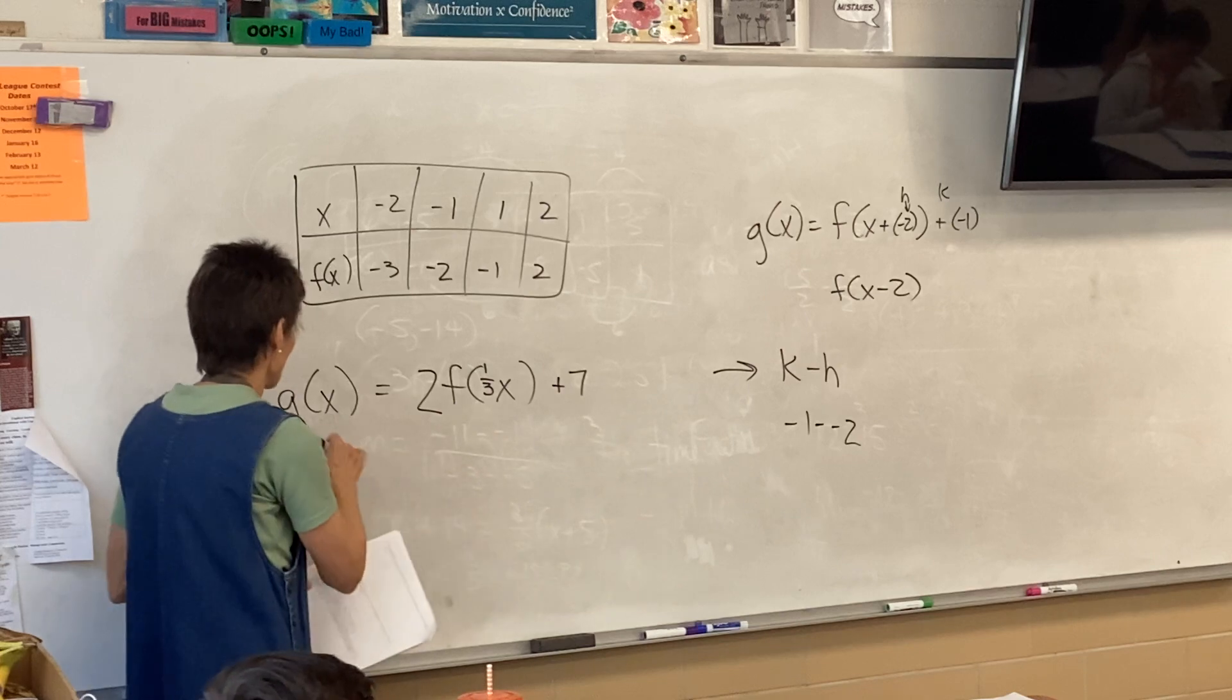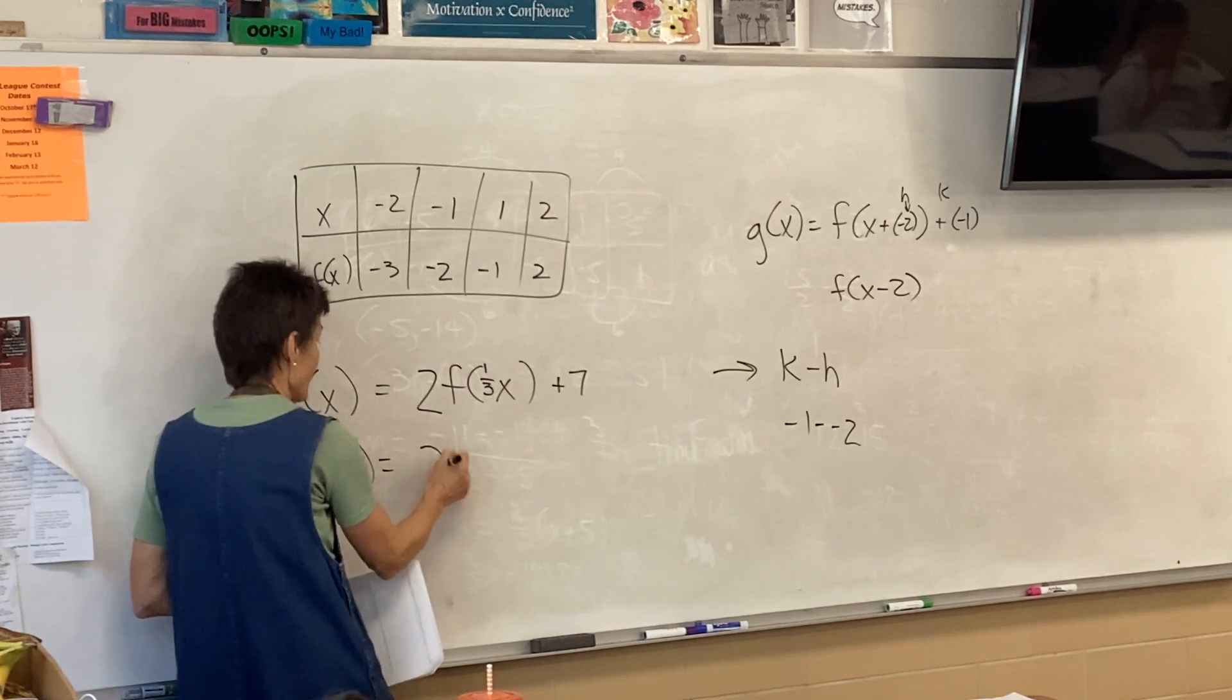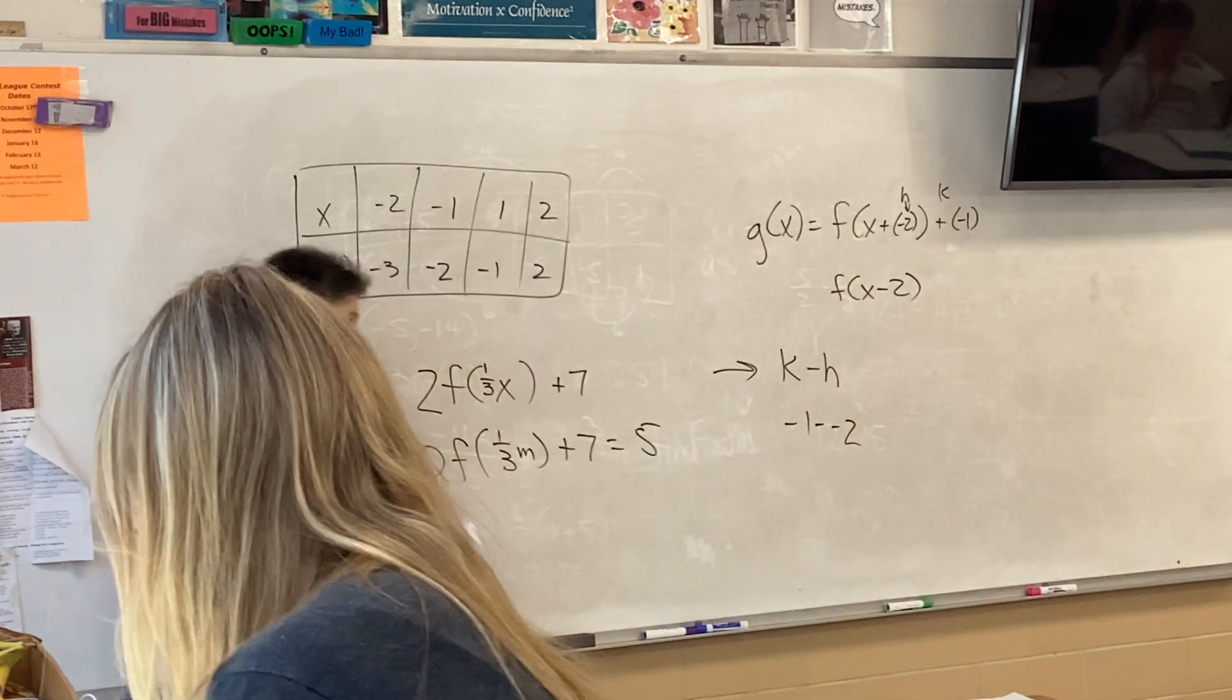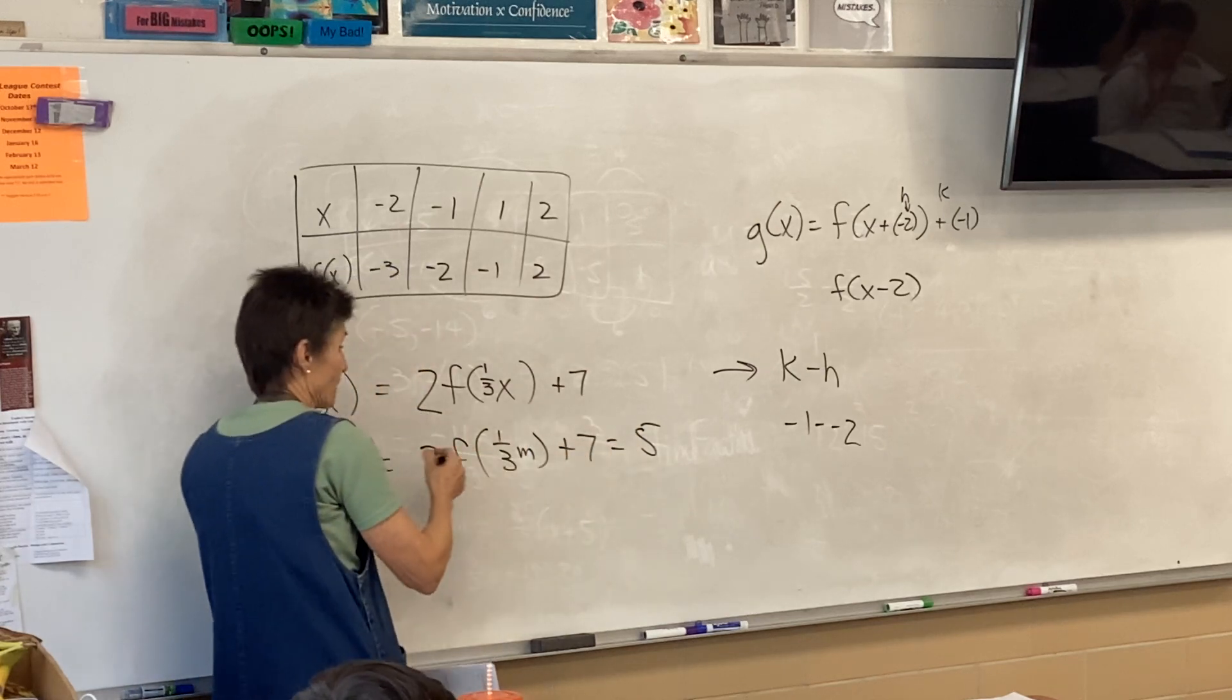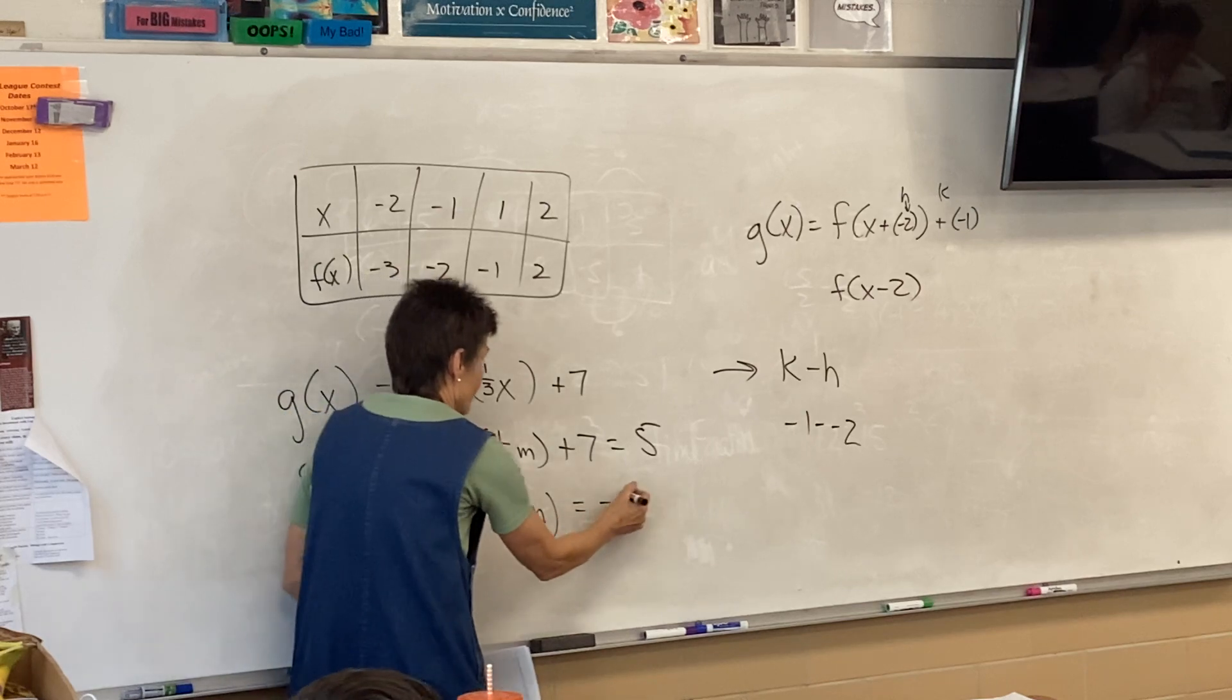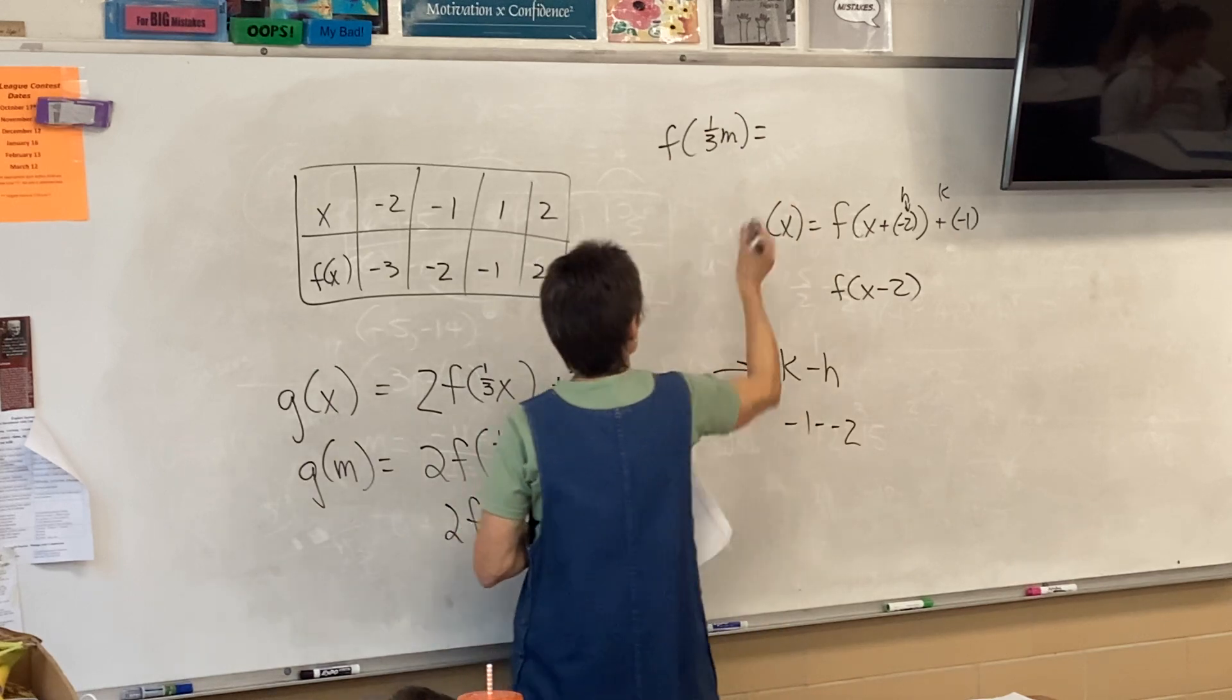And a vertical translation by seven. If g of m is five, so keep in mind, this is the new, this is f. This is the new function. So, g of m is five. That would be two f of one-third m plus seven, and that's five. That's got to be five. So, now we're going to solve this little equation. So, what would you suggest we do first? Subtract the seven. And then divide by two.